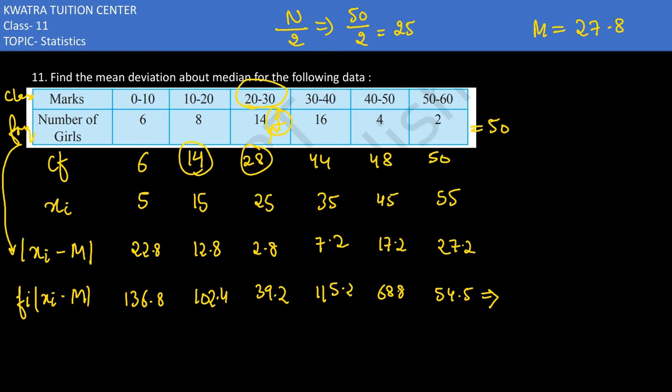This is equivalent to 516.8. And we know we divide it by the summation of f so that we can get the mean deviation about median with respect to median.